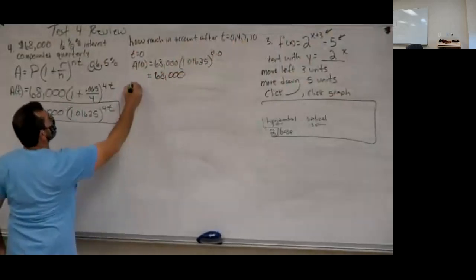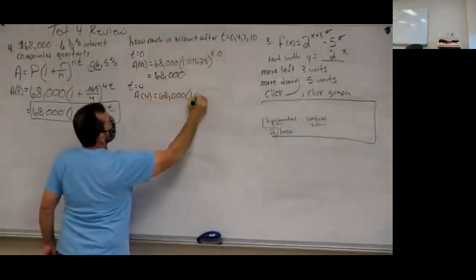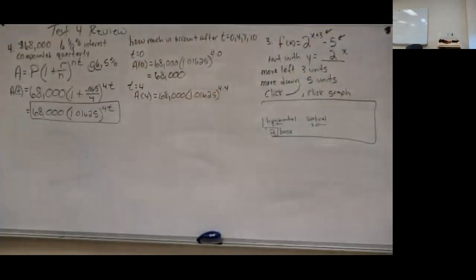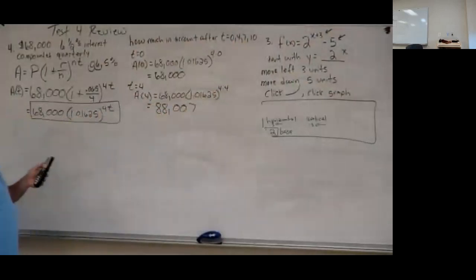For T equals 4: A(4) equals 68,000 times 1.01625 raised to 4 times 4, which is to the 16th power. I'm getting approximately $88,007. The decimal might be .16 or so — I didn't have to round the limit on that one.